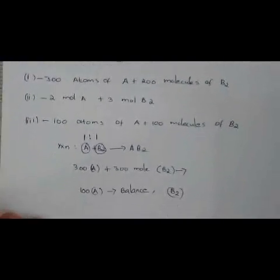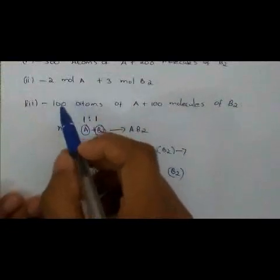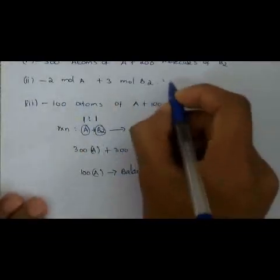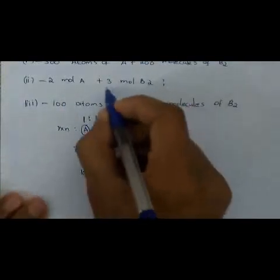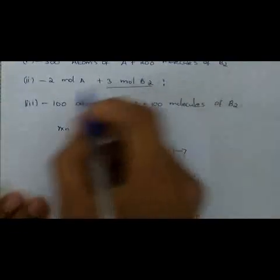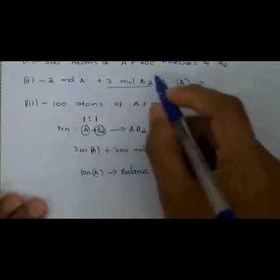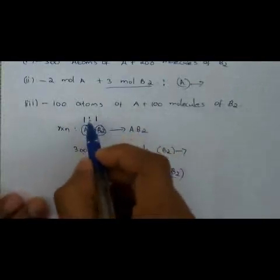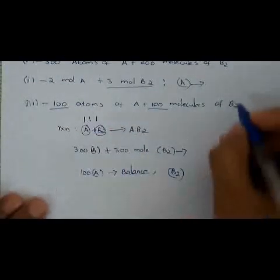For 3 mol of B2, using a 1-to-1 ratio with 2 mol A and 3 mol B2, the ratio works out to 1 is to 1. Therefore there is no limiting reagent in this case.